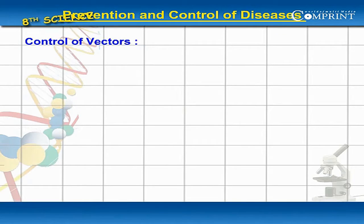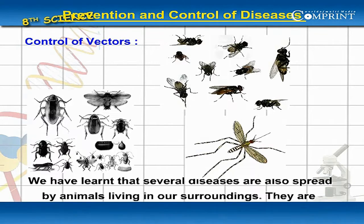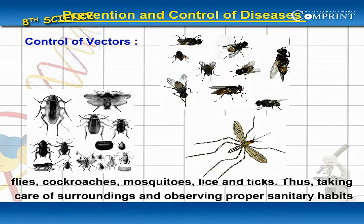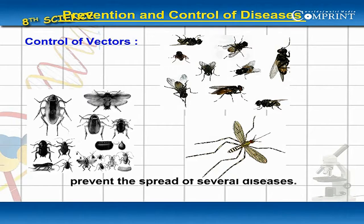Control of Vectors: We have learnt that several diseases are also spread by animals living in our surroundings — flies, cockroaches, mosquitoes, lice and ticks. Thus, taking care of our surroundings and observing proper sanitary habits prevent the spread of several diseases.